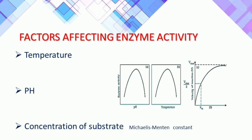Each enzyme shows its highest activity at a particular temperature and pH, called the optimum temperature and optimum pH. Its activity declines both below and above the optimum values. At low temperatures, enzymes become temporarily inactive, whereas at high temperatures the enzymatic activity is destroyed because proteins are denatured by heating.